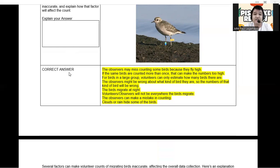Another point: if the same birds are counted more than once, that can make the numbers too high. Meaning to say, they can count one particular bird as twice. That would add up to the total number of the bird species flying high. For birds in a large group, volunteers can only estimate how many birds there are. So definitely that's another answer for estimation.